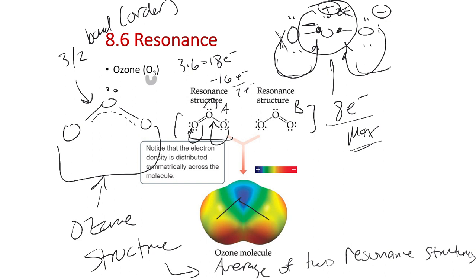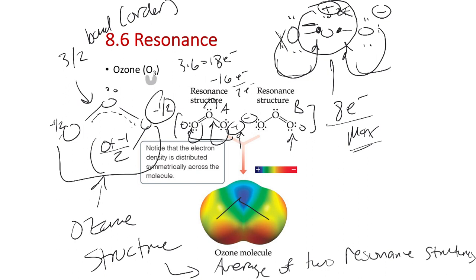We have resonance structure A and resonance structure B. They're equivalent but different from each other, so the real molecule composites or averages those structures. You might ask: what's the formal charge on each outer oxygen? We alternate between zero and minus one. If you average that out, it's minus one-half. So each outer O has a formal charge of minus one-half — from taking zero plus negative one and dividing by two.